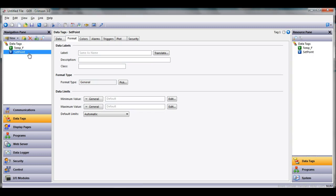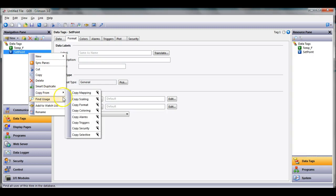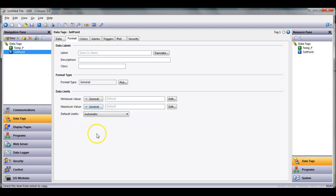I'm going to copy those settings over to setpoint by clicking on setpoint, right clicking on it, and saying copy from, select copy format. I have a trailing X asking me who do you want to copy the format from, so I'll click on temp F.